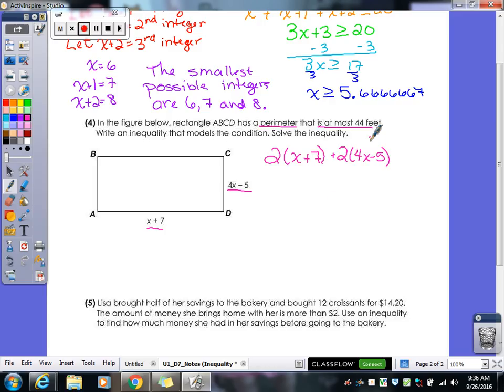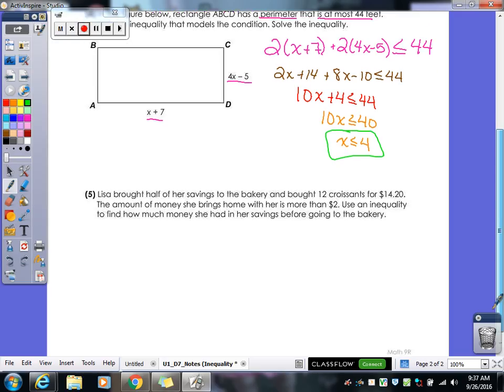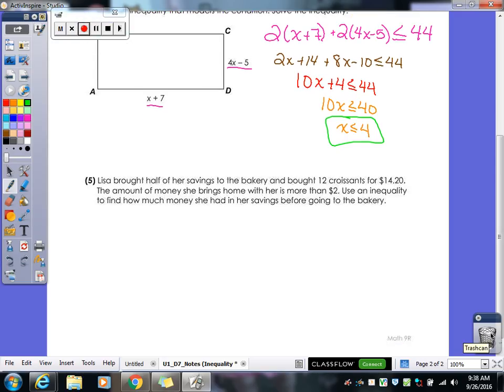They told us it is at most 44 feet. So which inequality do we use for at most? Less than or equal to. There we go. I'll give you guys about a minute, maybe a minute and a half to solve that. Do we get X is less than or equal to 4? Yep. Now, did it tell us we had to actually figure out what the length and the width of the rectangle were? No. They just told us to solve the inequality. So we're done with that one. We don't have to do anything else with that. Now if you did go ahead and figure out what those were, you certainly will not lose points. But you didn't have to for that one.